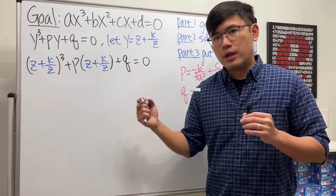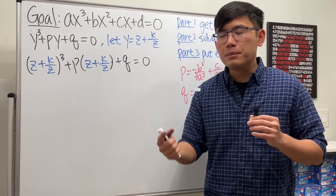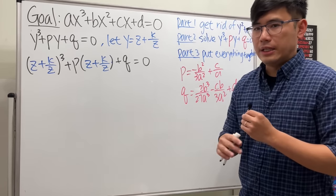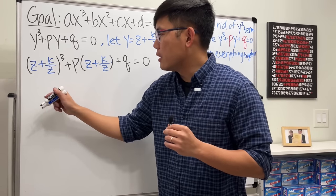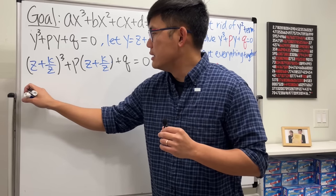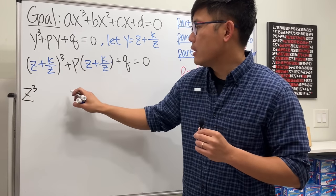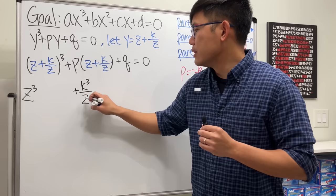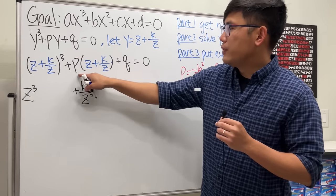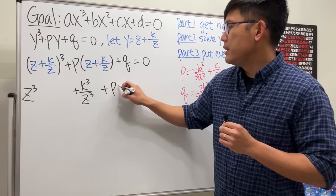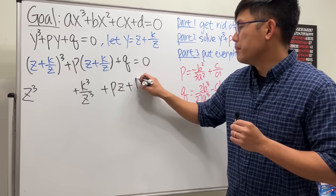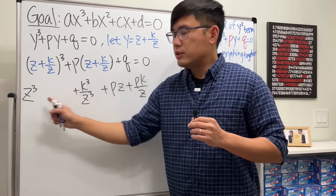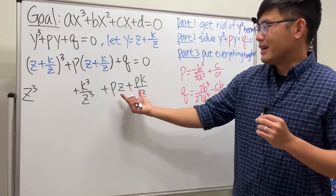If we plug y = z + k/z into y³ + py + q = 0, we get (z + k/z)³ + p(z + k/z) + q = 0. Expanding: z³ + k³/z³ + 3z²·(k/z) + ... + pz + pk/z + q = 0. In order for this to become a quadratic in z³, we want all other z terms to vanish.